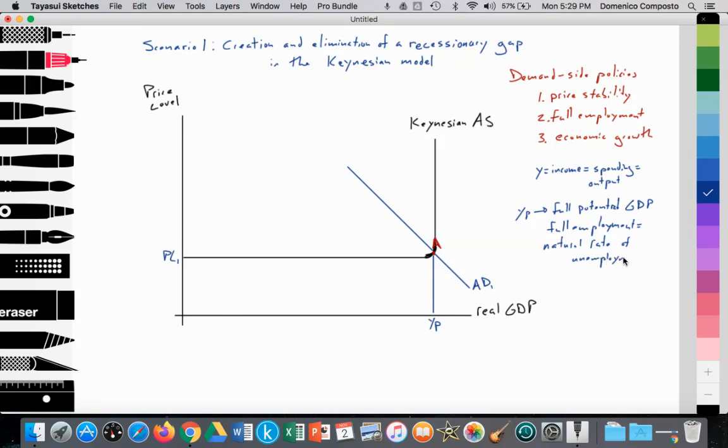And full employment is the same as the natural rate of unemployment. And the natural rate is equal to, we don't want to forget this, it's equal to one, structural unemployment, plus number two, frictional unemployment. And number three, seasonal unemployment.